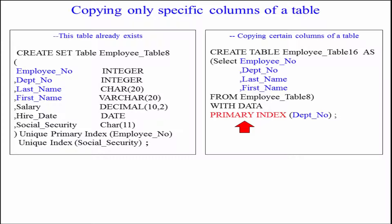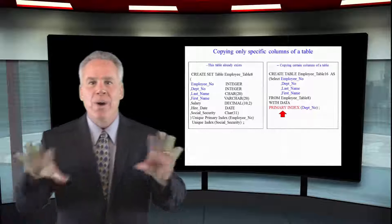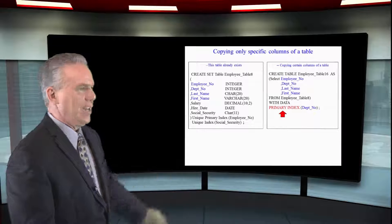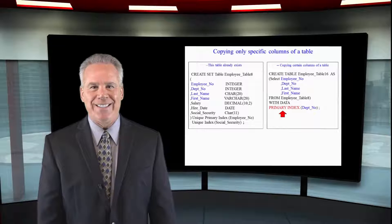We're only bringing four of the columns, not all five of them, with data and we're going to give it a new primary index. That's the way it's done.